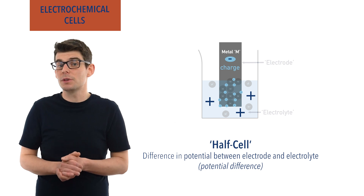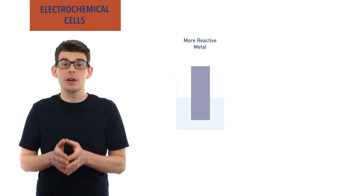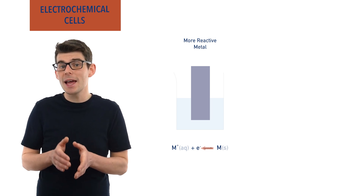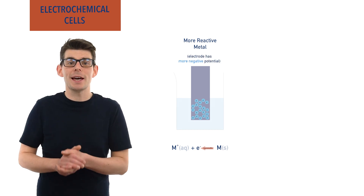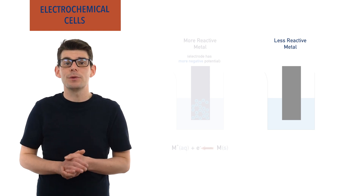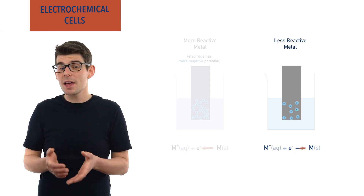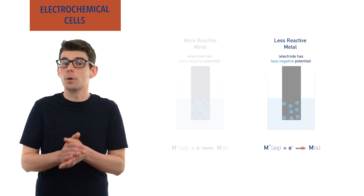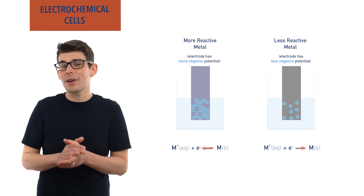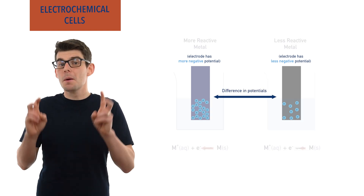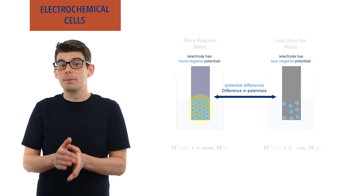What we can do instead is see how the electrical potentials of electrodes from different half cells compare to each other, and measure the potential difference between them. The more reactive the metal in a half cell, the more the position of equilibrium lies to favour the oxidation, meaning the solid metal electrode ends up with more surplus negatively charged electrons and a greater negative potential. For a less reactive metal, the position of equilibrium would lie less in the direction of oxidation, meaning the solid electrode doesn't end up with such a large surplus of electrons and therefore its electrical potential isn't as negative.